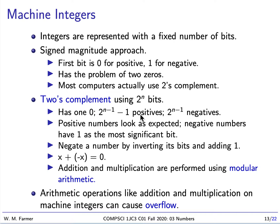Addition and multiplication are performed using modular arithmetic — essentially clock arithmetic. And it is possible to have overflow. If we take two numbers that are large and add or multiply them together, they could be so big we can't represent them. This is what's called overflow.